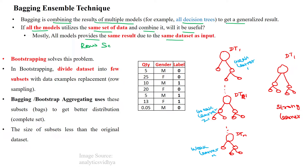So what we will use is row sampling and feature sampling. In row sampling, some of the rows will be avoided for certain models, and some rows will be given repeatedly to other models. Row sampling and feature sampling are done in the bagging ensemble technique.